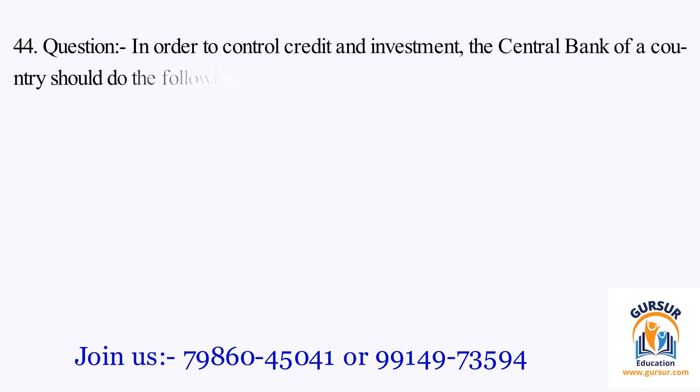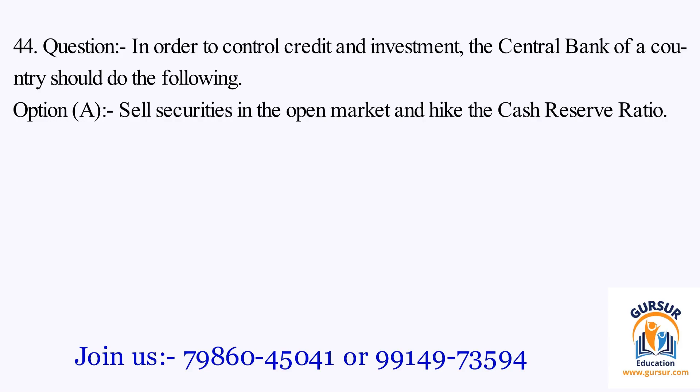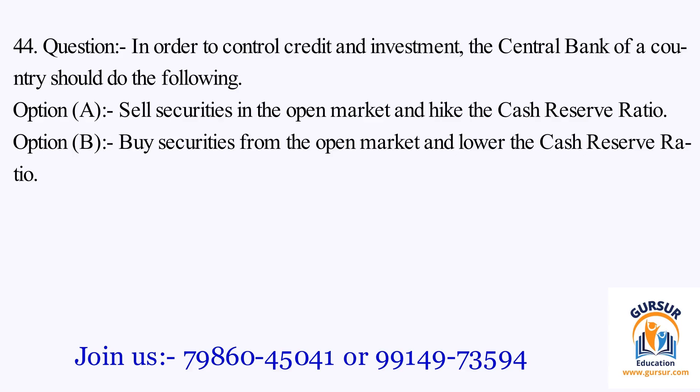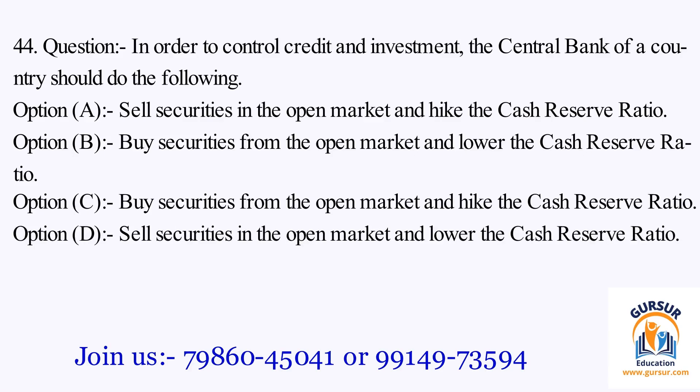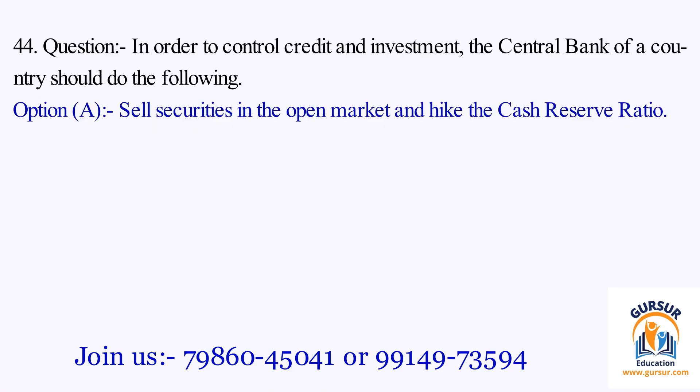Question number 44. In order to control credit and investment, the central bank of a country should: Option A: sell securities in the open market and hike the cash reserve ratio. Option B: buy securities from the open market and lower the cash reserve ratio. Option C: buy securities from the open market and hike the cash reserve ratio. Option D: sell securities in the open market and lower the cash reserve ratio. The right answer is Option A, that is sell securities in the open market and hike the cash reserve ratio.